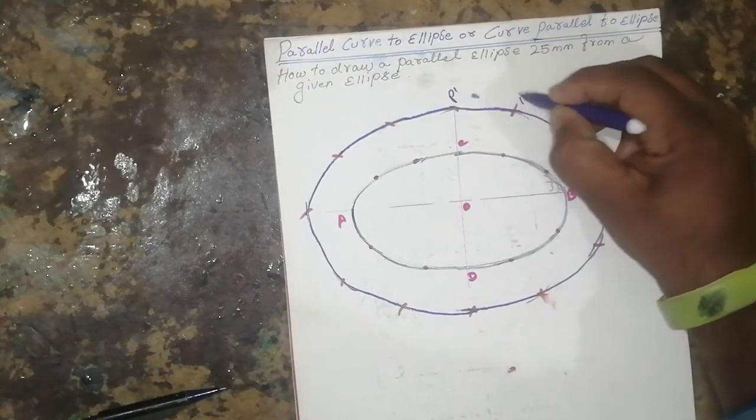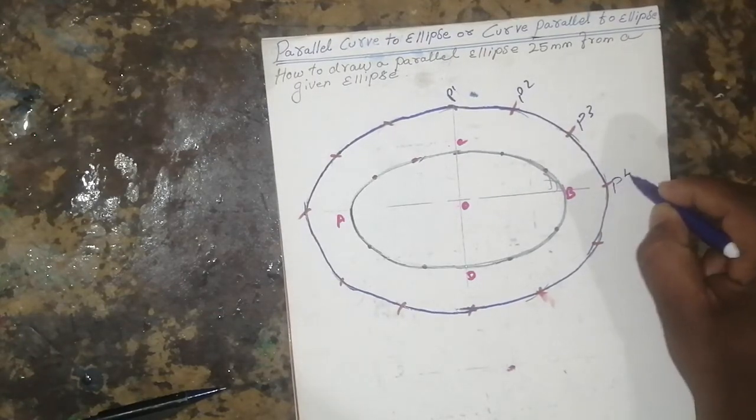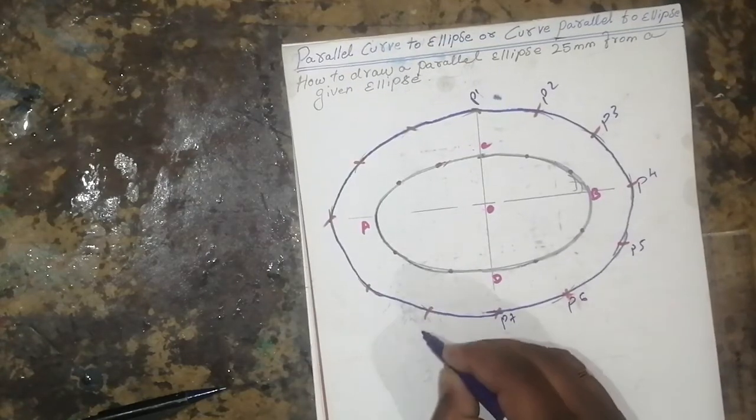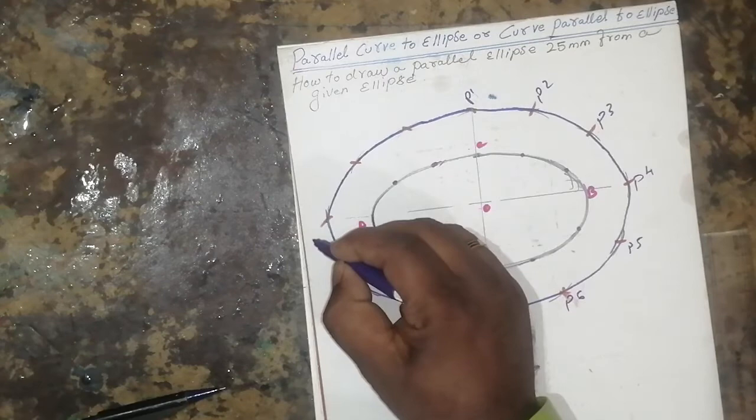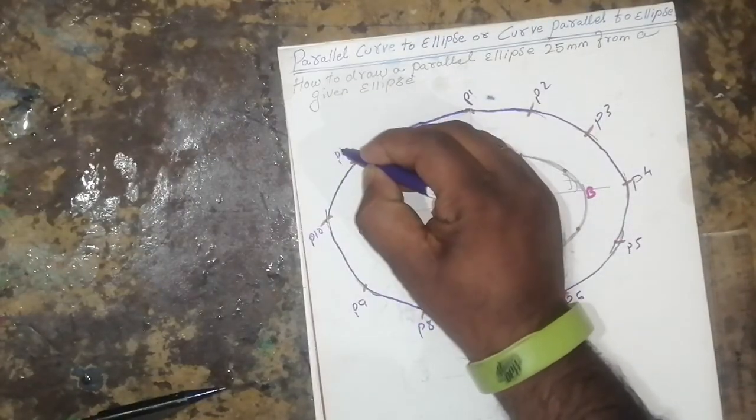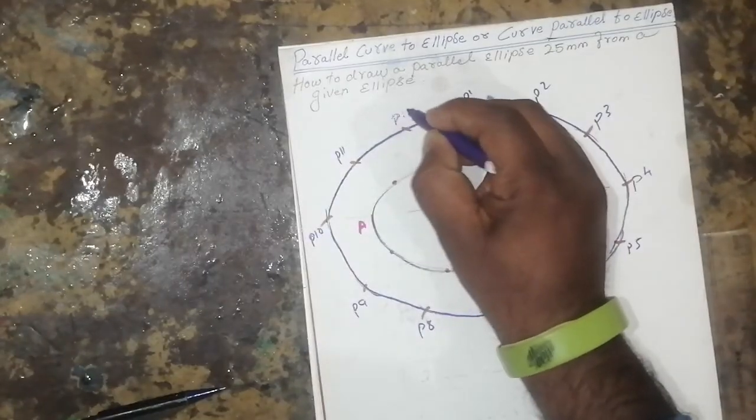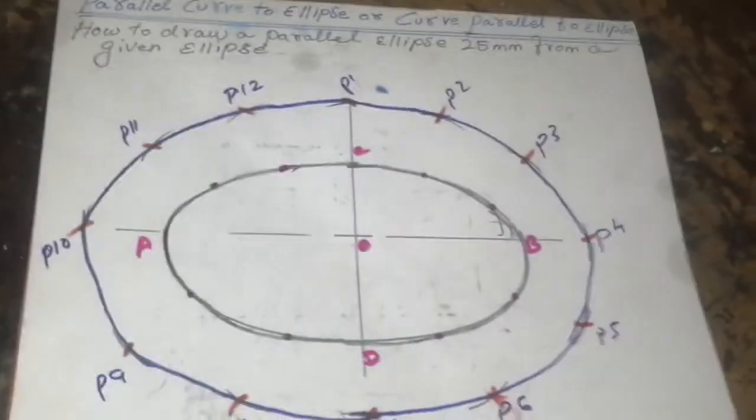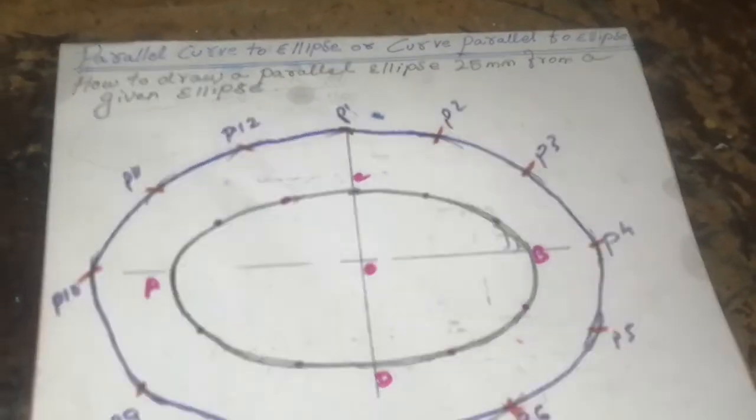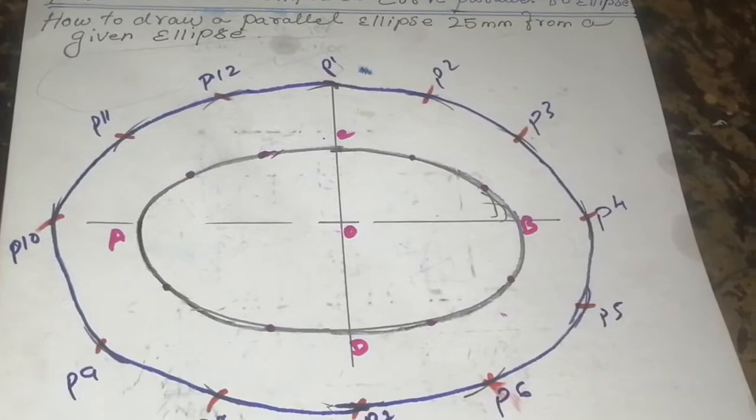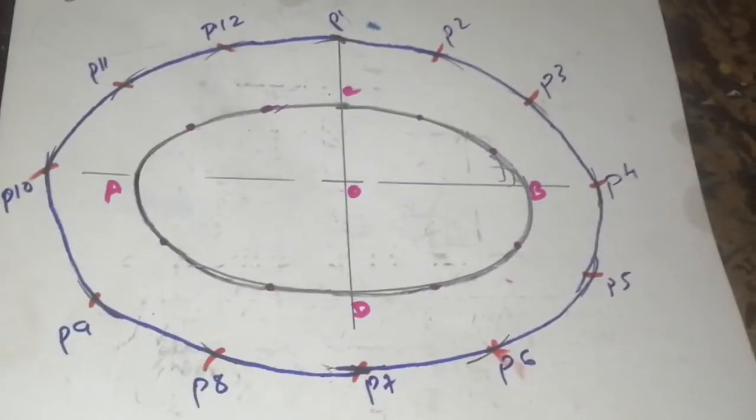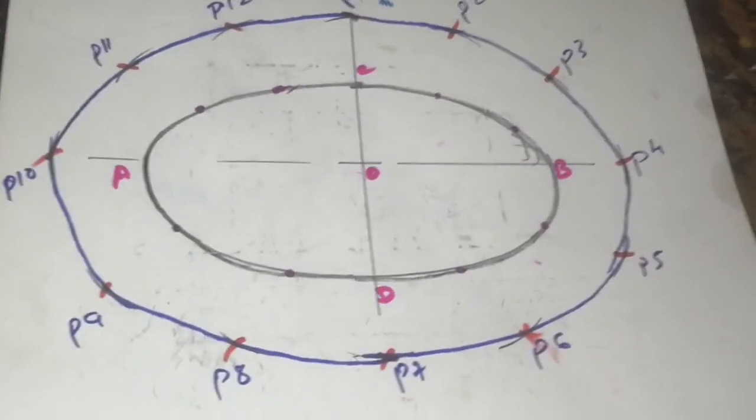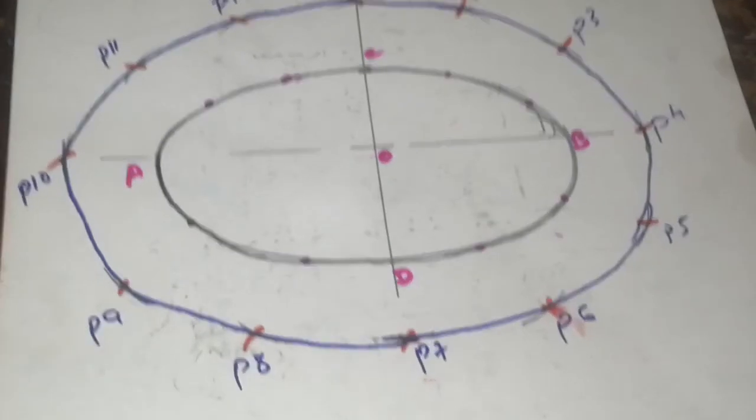You can name it also P1, P2, P3, keep on going P4, P5, P6, P7, P8, P9, P10, P11, and P12. Thank you for watching my channel. If you have any doubt, you can ask me. See, the question is how to draw a parallel ellipse 25mm from a given ellipse. You can watch my previous video on how to draw an ellipse. I have taught you more than nine to ten types of ellipse. Thank you for watching my channel.